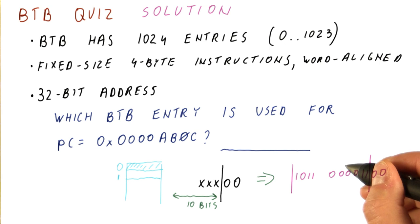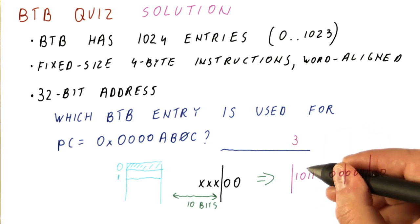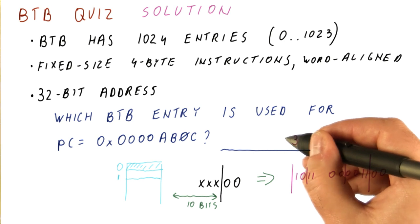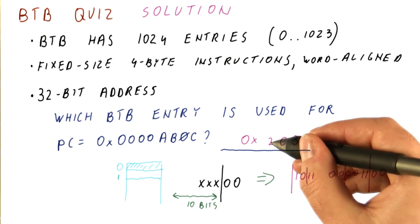And now let's convert that to hex. This would be the first hex digit, so it would be 3. This would be the next hex digit, so it would be C. And this would be 2. So we're talking about the entry number 2C3.